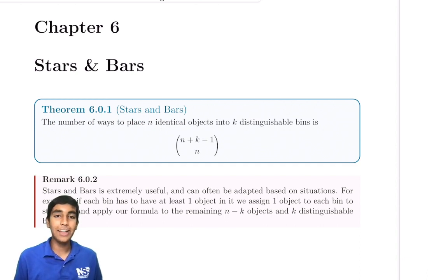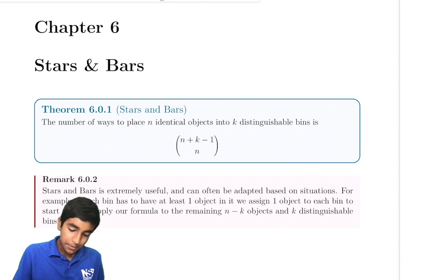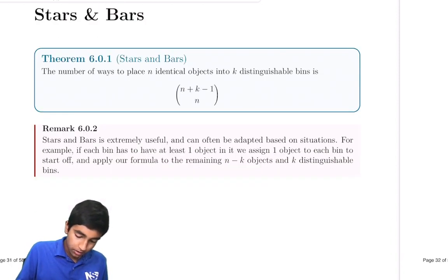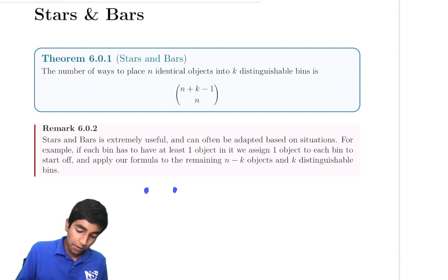Now, stars and bars is very clever. Basically, what it says is that if we have n objects, and they don't have to be identical objects, and we're dividing them into k bins, let's say there's n objects and k bins.